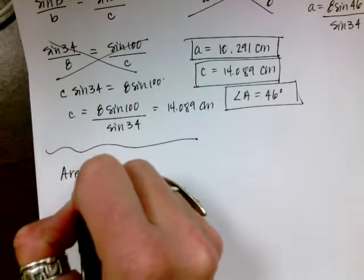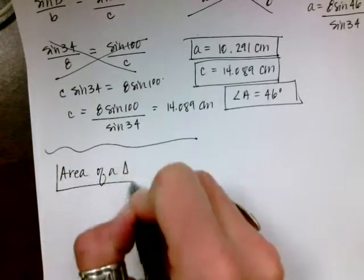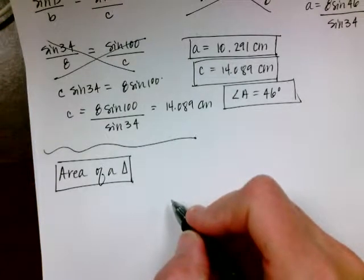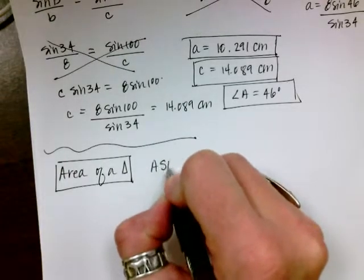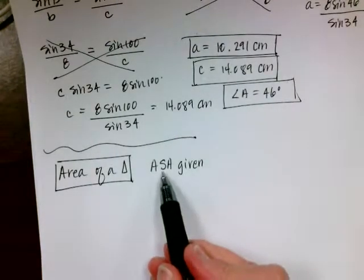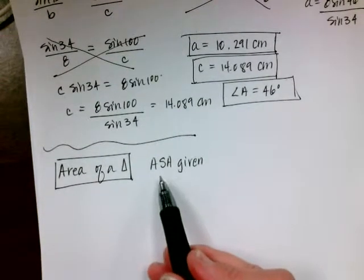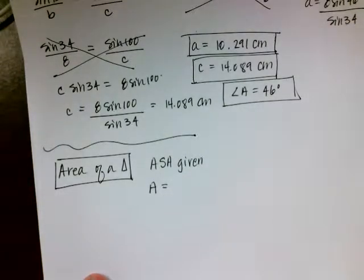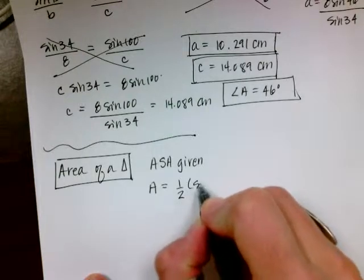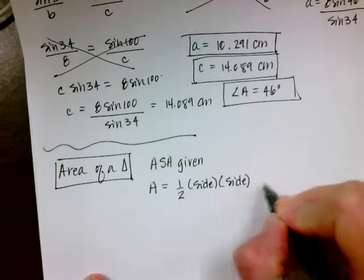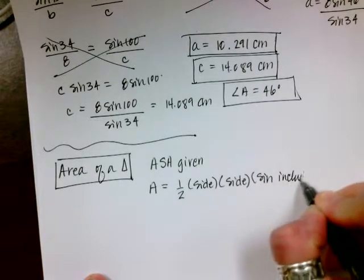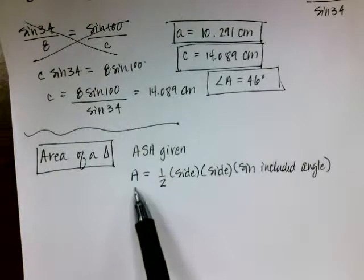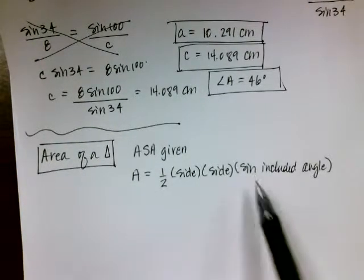The next thing I want to talk about is a new way to calculate the area of a triangle. In this case, I have to be given side-angle-side — meaning the angle has to be included between the two sides. My shorthand for the formula: area equals one-half × side × side × sine of the included angle. That's how I remember it — one-half side-side-sine of the included angle.